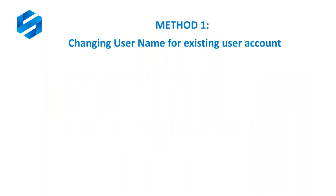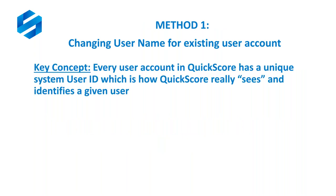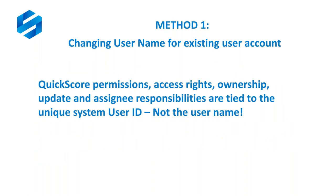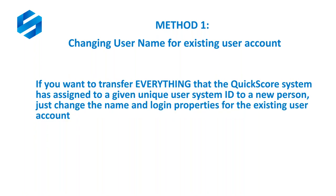Let's start with method one: changing the username for an existing user account. There's a key concept behind user accounts in QuickScore — every user account has a unique system user ID, which is how QuickScore sees and identifies any given user. The personal username shown in notes, reports, history logs, and other areas is simply a more personalized alias for the underlying unique system user ID.